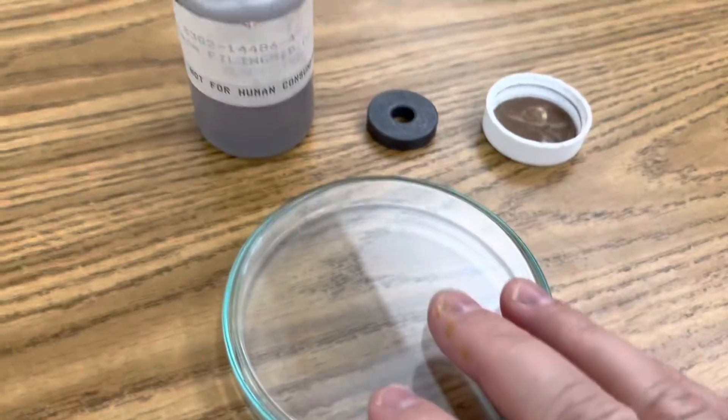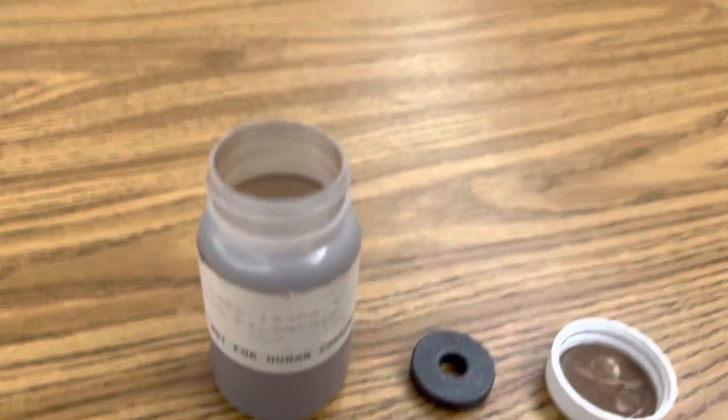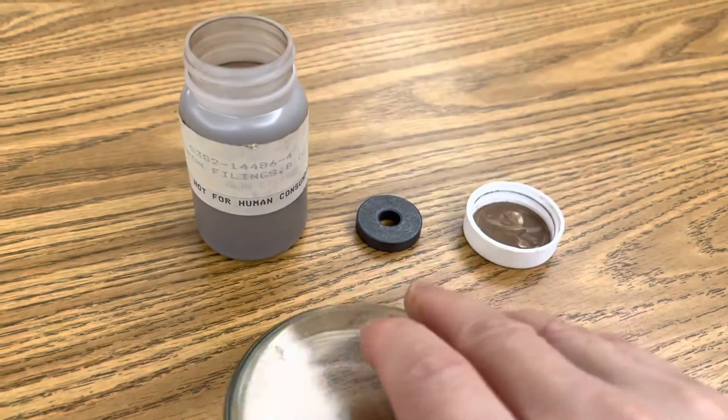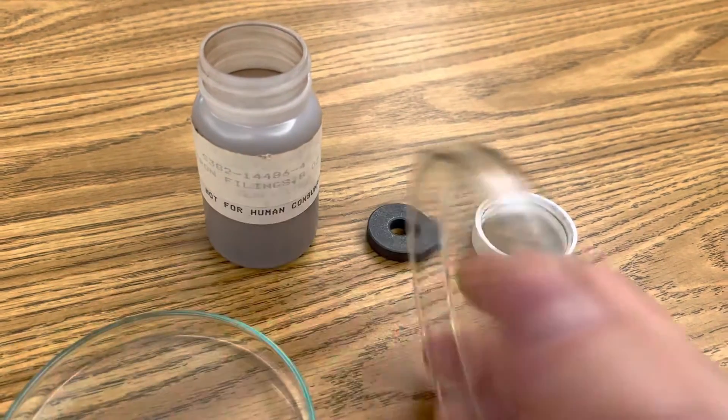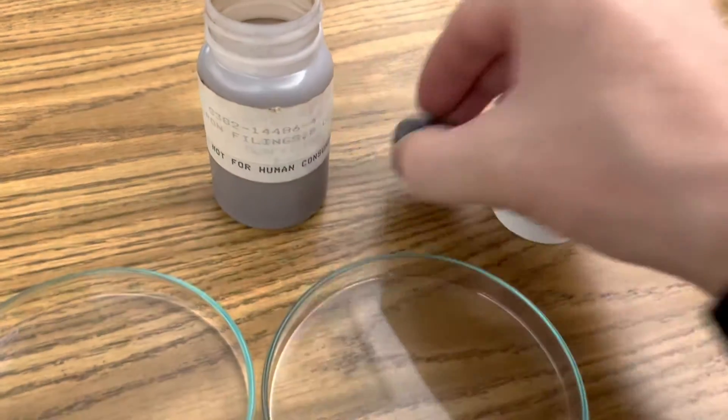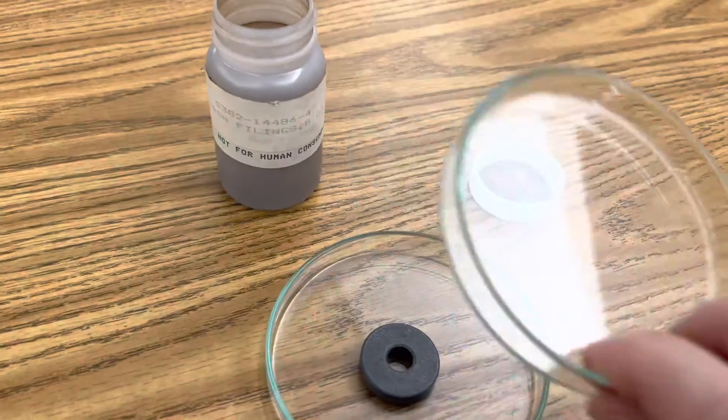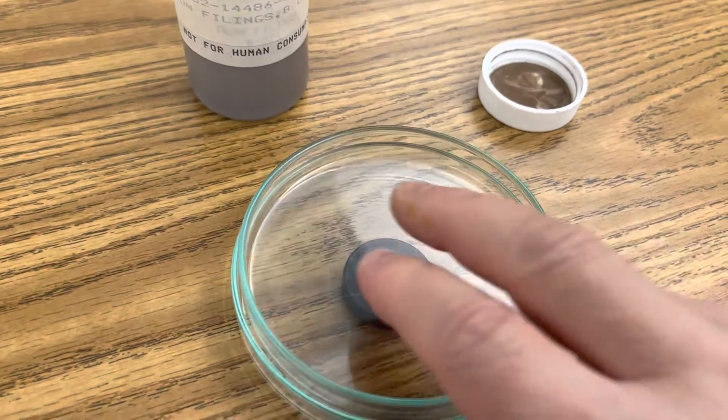This next demonstration just uses a petri dish, a round magnet, and iron filings. What I like to do for this is to put your petri dish so that one dish sits inside the other over top of your magnet like this.